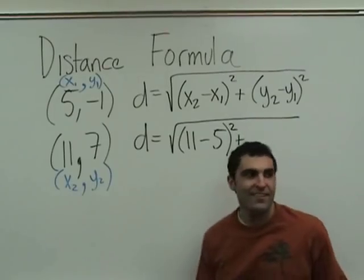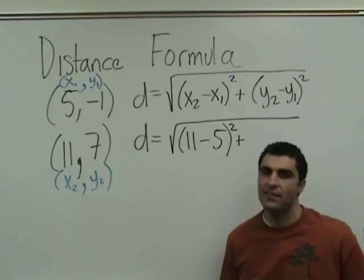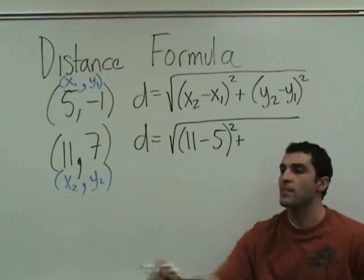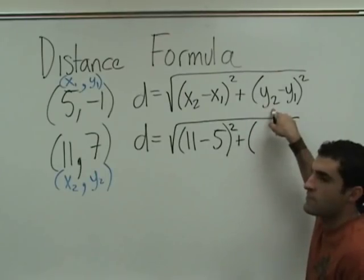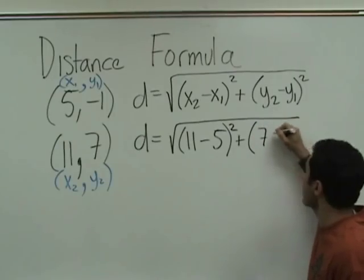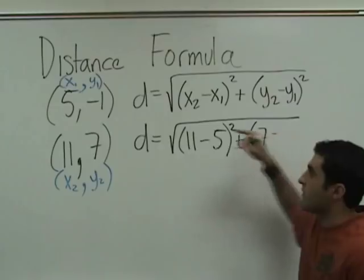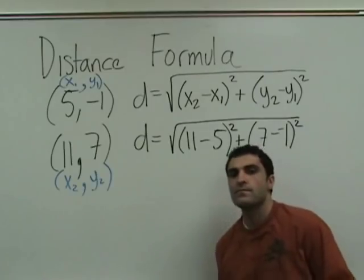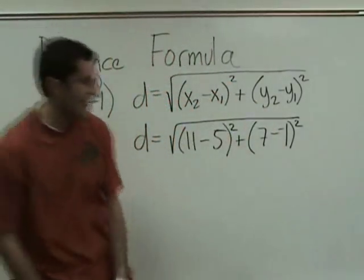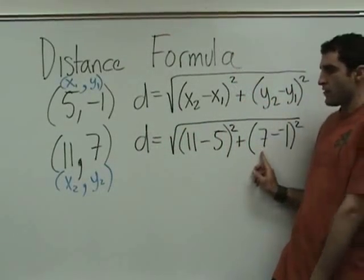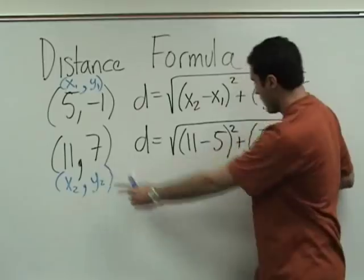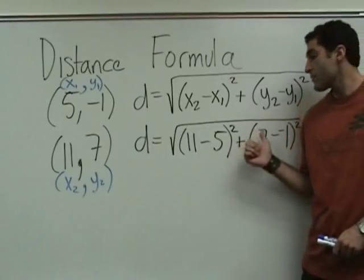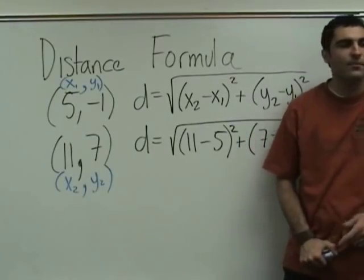Plus. What is y2 minus y1? Seven is y2. Minus negative one — y1 is negative one — so it's minus negative one. This will be plus. Yes, I just want you to see the double negative first. Do you always have to write D equals? Yes, distance equals. Distance formula is one formula for D, for the distance.